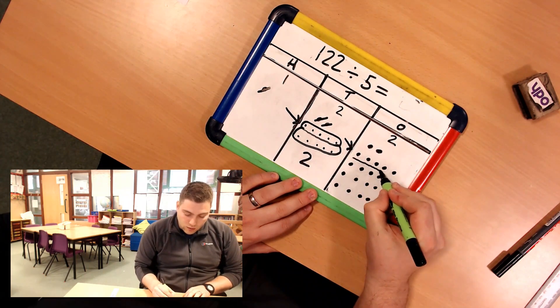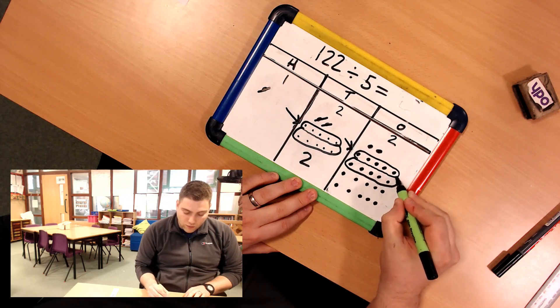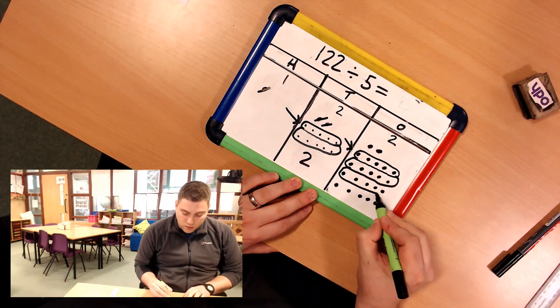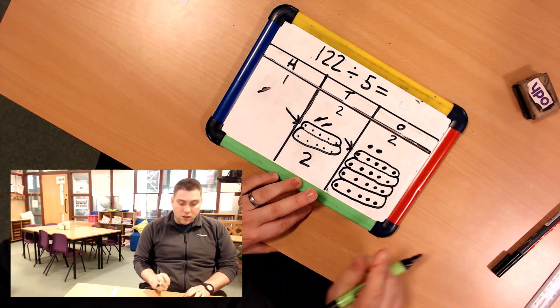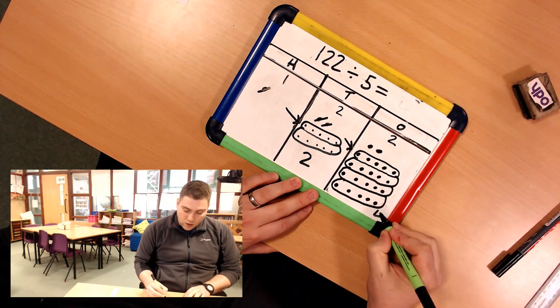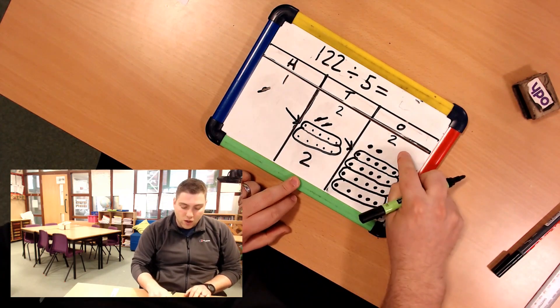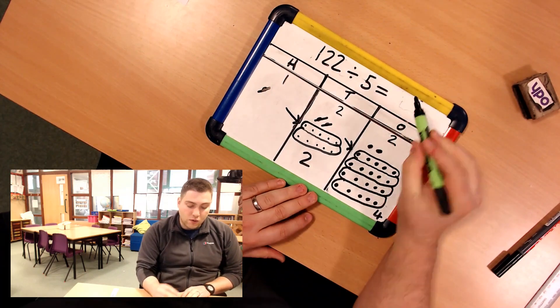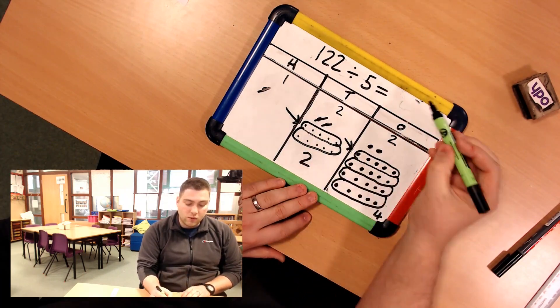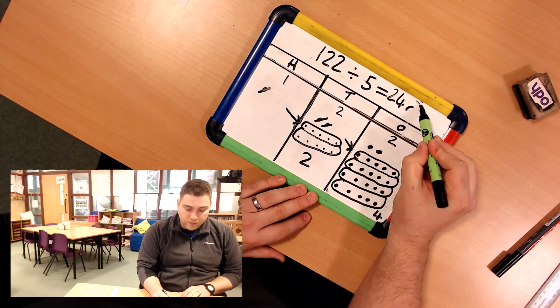Now equal groups of 5, we've got 1, 2, 3, 4, 5, 1, 2, 3, 4, 5, 1, 2, 3, 4, 5. So now I've got 4 equal groups of 5. So I've got 24, but this time I've got 2 that are remaining, 2 that are left over. So 122 divided by 5 is 24 remainder 2.